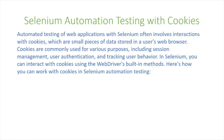In today's video, we're going to talk about Selenium automation testing with cookies. Automation testing of web applications with Selenium often involves interactions with cookies, which are small pieces of data stored in a user's web browser. Cookies are commonly used for various purposes, including session management, user authentication, and tracking user behavior. In Selenium, you can interact with cookies using the web driver's built-in methods.